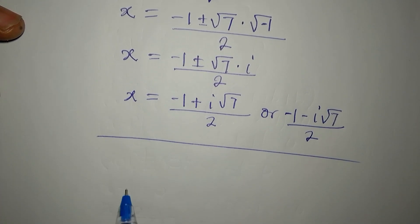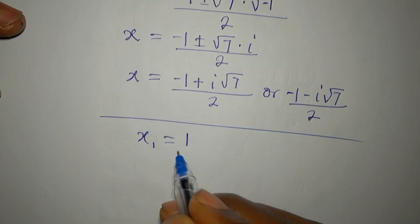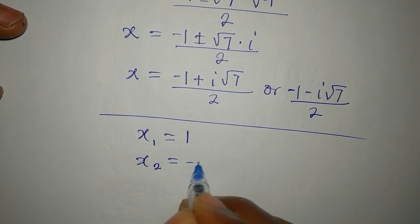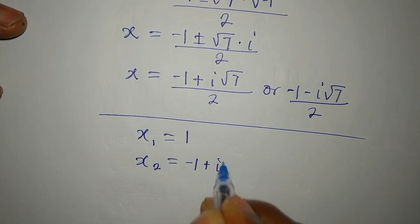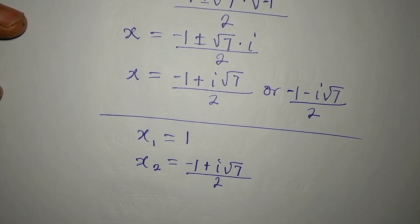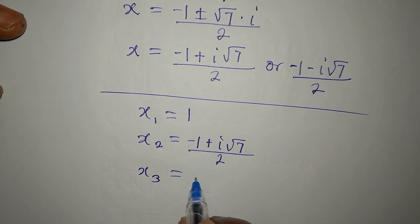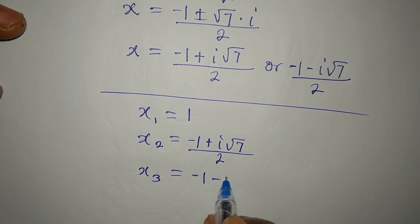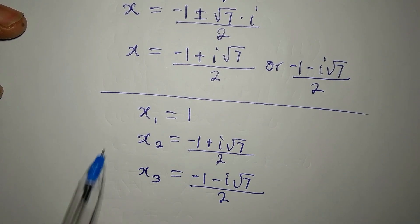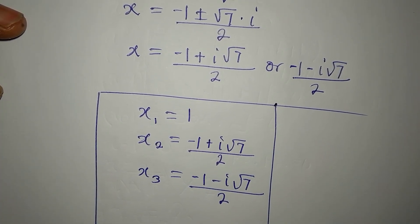Bringing all three solutions together: x₁ = 1, x₂ = (−1 + i√7) / 2, and x₃ = (−1 − i√7) / 2. These three are the complete solutions to the equation x³ + x = 2.